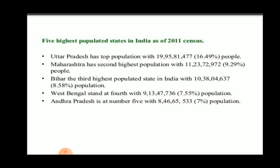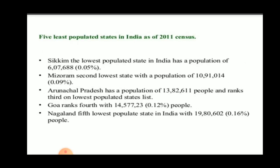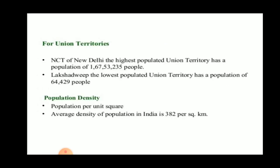The five highest populated states in India as of the 2011 census are Uttar Pradesh, Maharashtra, Bihar, West Bengal, and Andhra Pradesh. The five least populated states are Sikkim, Mizoram, Arunachal Pradesh, Goa, and Nagaland. For union territories, New Delhi is the highest populated with a population of 1,67,53,235, while Lakshadweep is the lowest populated union territory with a population of 64,429 people.